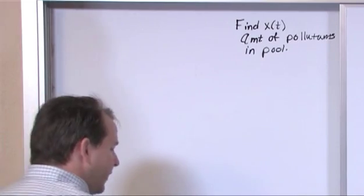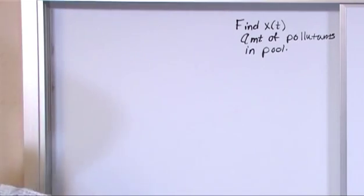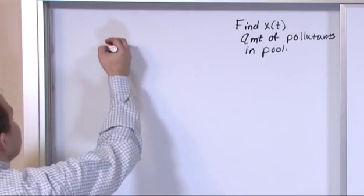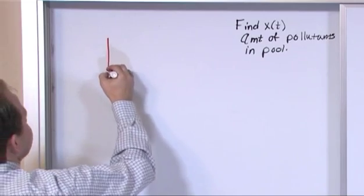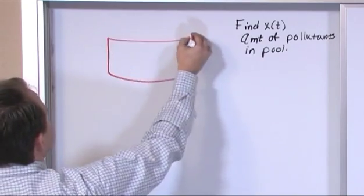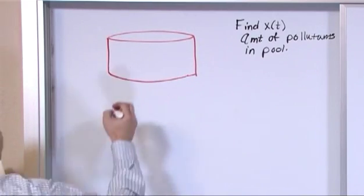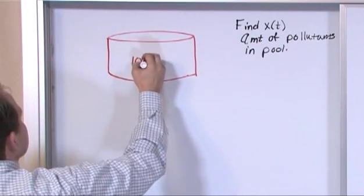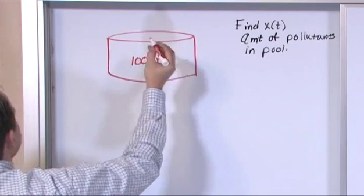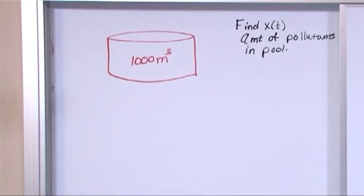So if you had to draw a picture, which is a pretty useful thing to do in a lot of these problems, then you would have a pool, right? Something like this. And the pool would be 1,000 cubic meters. It's just the volume of it.